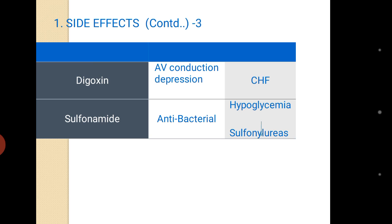The third type of side effect gives a hint for the development of new drugs. Example: digitalis produces AV conduction depression, giving a hint it can be used for congestive heart failure. Similarly, sulfonamides, first introduced as antibacterial agents, produced hypoglycemia as an adverse effect — since the drug lowers blood glucose, it could be used for hyperglycemia, and from this, sulfonylureas were developed as oral antidiabetic drugs.